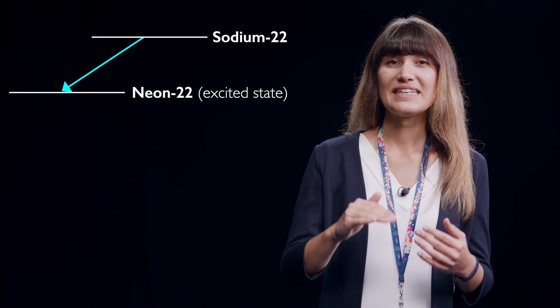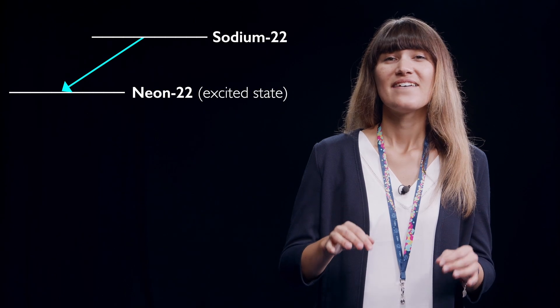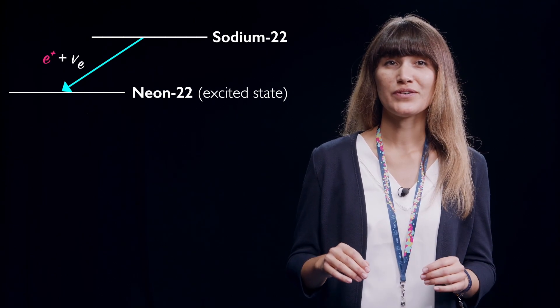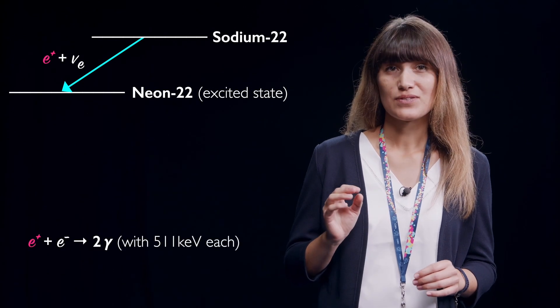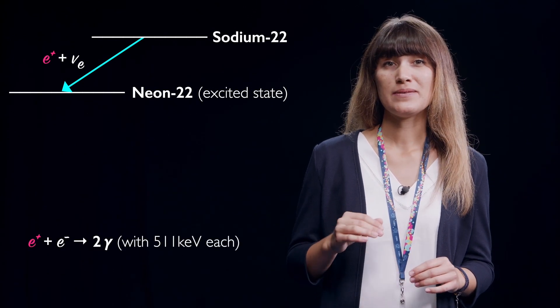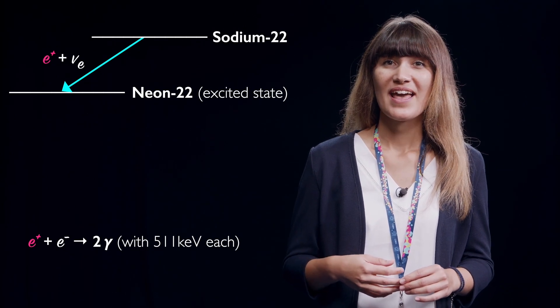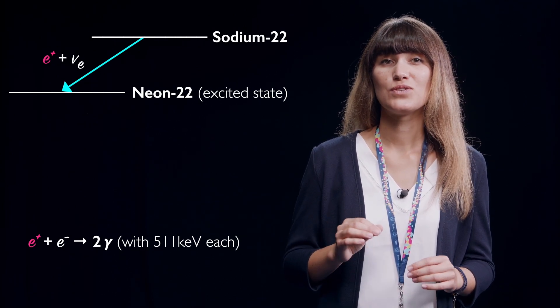How does the experiment work? The radioactive source is sodium-22. The sodium atoms transform into neon atoms in an excited state while emitting a positron and an electron neutrino. The positron will then move a few millimeters before it annihilates with a nearby electron and they transform into two photons.